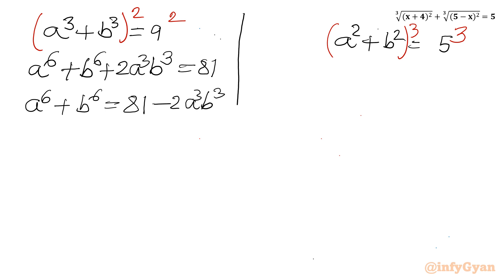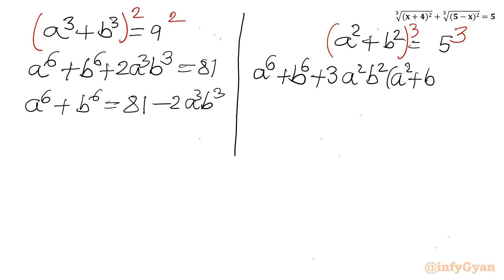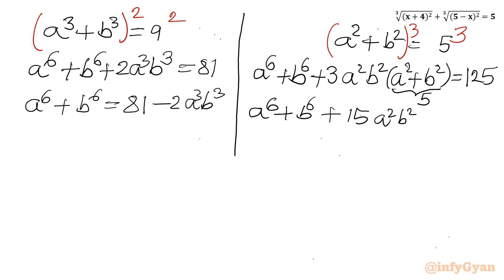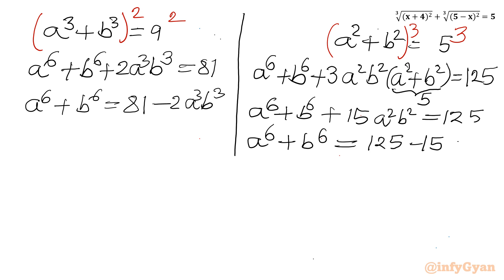Now for the second equation, I will apply (a+b) whole cube. So a power 6 plus b power 6 plus 3 times a squared b squared times (a squared plus b squared) equals 125. Now this bracket (a squared plus b squared) is 5. So I can write a power 6 plus b power 6 plus 15 a squared b squared equals 125, or a power 6 plus b power 6 equals 125 minus 15 a squared b squared.